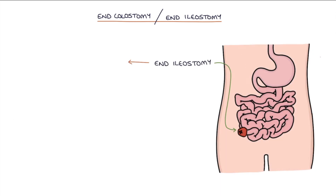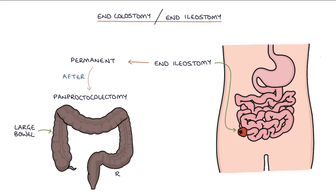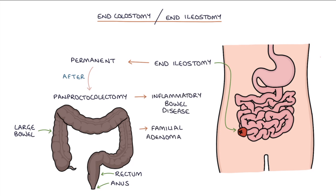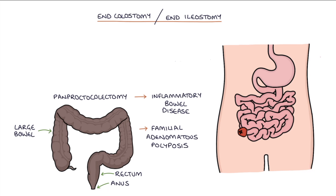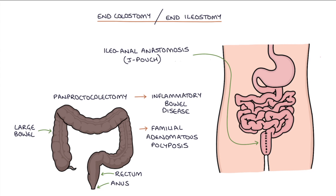End ileostomies are permanent after a panproctocolectomy, which is a total colectomy with removal of the large bowel, rectum and anus. This procedure may be performed in the treatment of inflammatory bowel disease or familial adenomatous polyposis, or FAP. An alternative to creating a permanent end ileostomy is to create an ileoanal anastomosis or J-pouch, where the ileum is folded back on itself and fashioned into a larger pouch that functions a bit like a rectum. This J-pouch is then attached to the anus and collects stools prior to the person passing a motion.